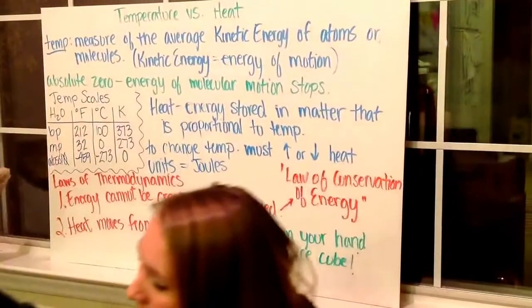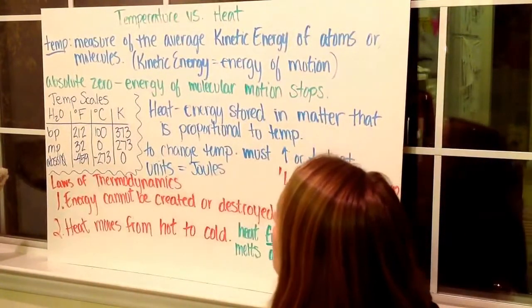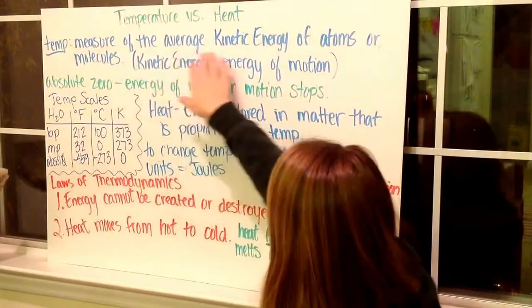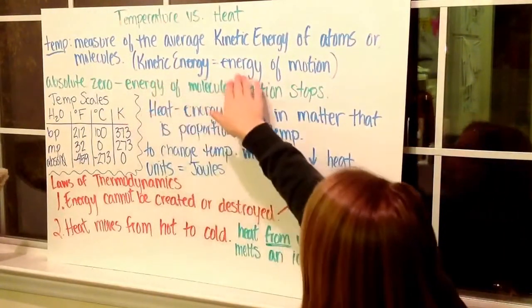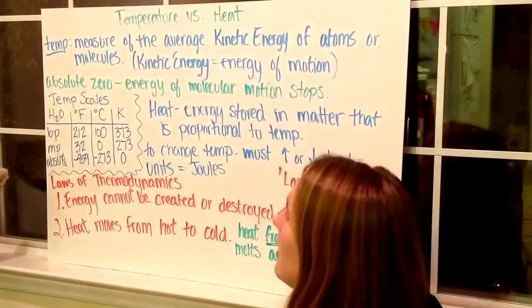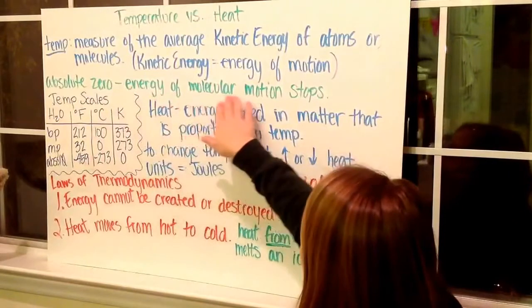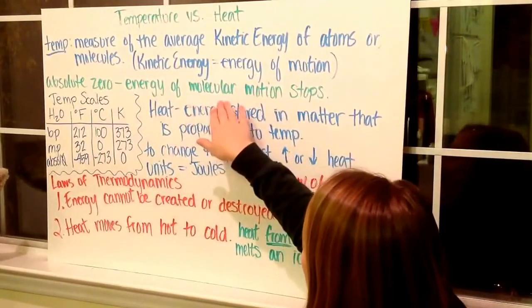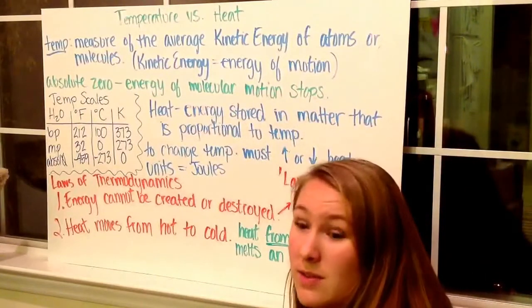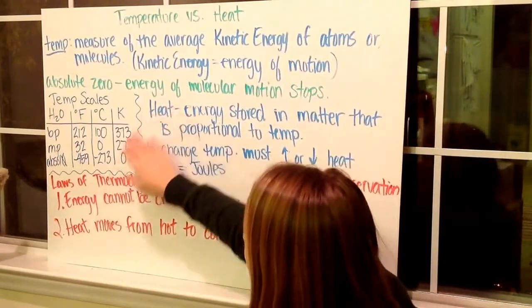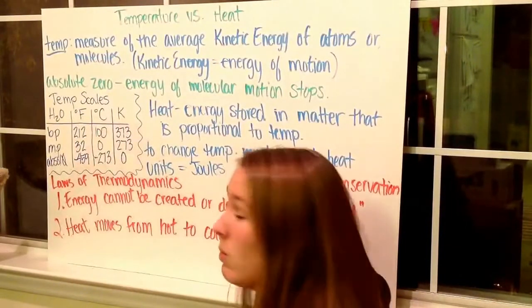So with that being said, what is the difference between temperature and heat? Temperature is the measure of average kinetic energy of atoms or molecules. Kinetic energy is the energy of motion. We can have absolute zero. This is the energy of molecular motion when the energy of molecular motion actually comes to a stop. So they said that all molecules have stopped moving. We can measure temperature by Fahrenheit, Celsius, or Kelvin.